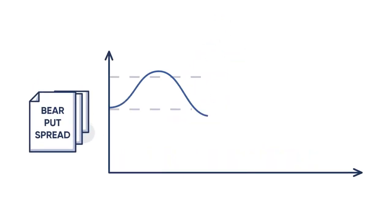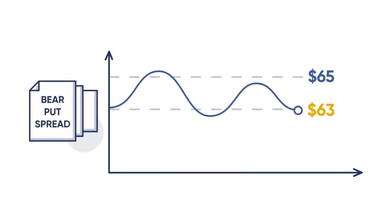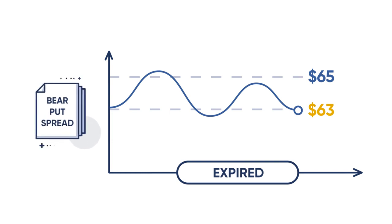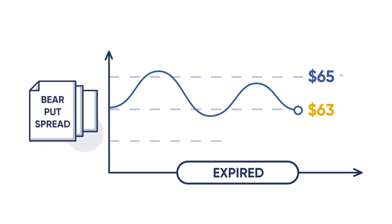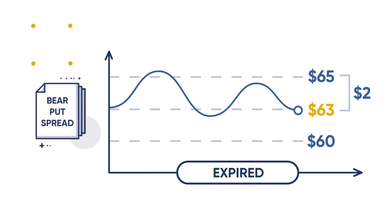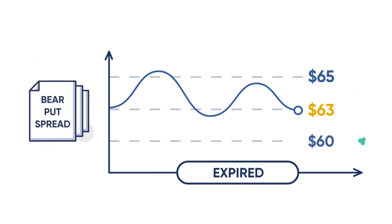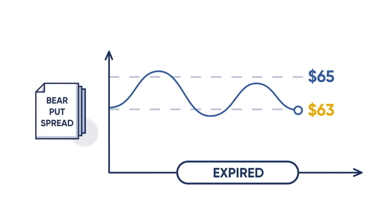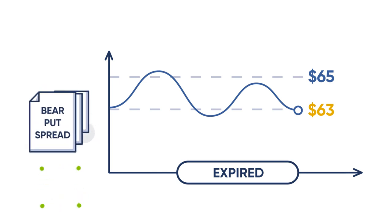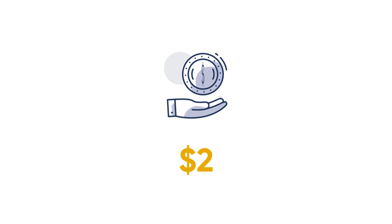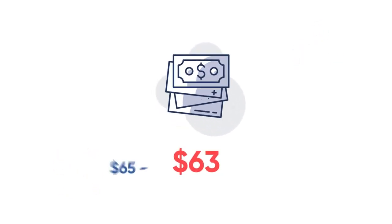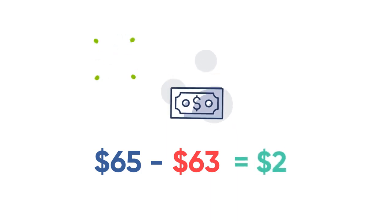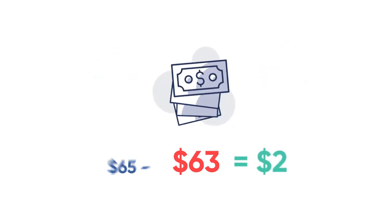Now suppose that XYZ is trading lower at $63 at expiration. At this point, your long 65 strike put is worth $2 while your short 60 strike put expires worthless. Netting these two values, the spread is worth exactly what you paid for — $2. In other words, with XYZ at $63 at expiration, the $65 put has a $2 value, so you'd break even.